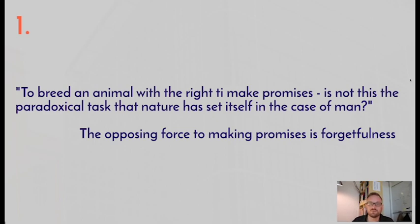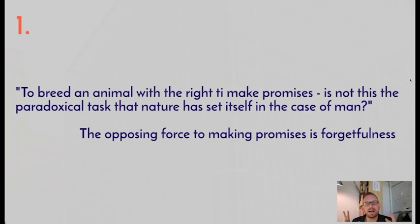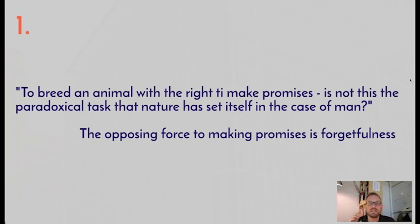Nietzsche says, quote, 'To breed an animal with the right to make promises — is not this the paradoxical task that nature has set itself in the case of man?' Nietzsche is offering the idea that human beings make promises, and we have the right of making promises. He ultimately thinks this is paradoxical in nature, because what would be most natural is for human beings to pursue their interest wherever they recognize those interests, whether or not they've made promises. But when you make a promise, you're setting yourself up to a commitment in the future when you're not potentially aware of what the conditions for meeting that promise might actually be.